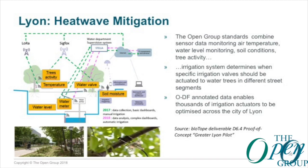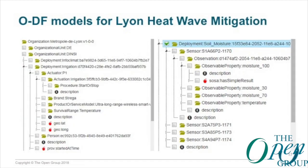In Lyon we have a heat wave mitigation system. If it's really hot in Lyon, you can cool down certain places efficiently by providing more water to trees. They have equipped some trees in their parks with sensors that indicate how much water the trees actually contain. Based on outside temperature, how much water the trees already have, and other factors, they decide whether to give more water to the trees in order to cool down the climate. All this data is annotated and published using OMI, ODF, and some semantic standards.